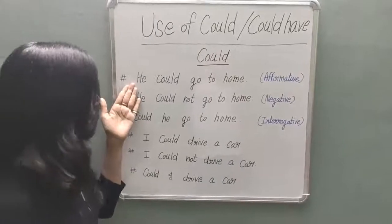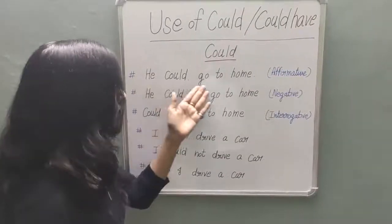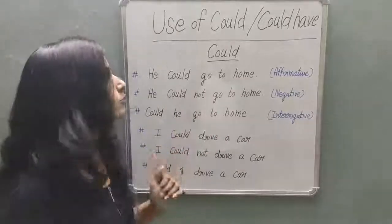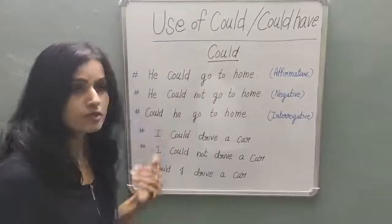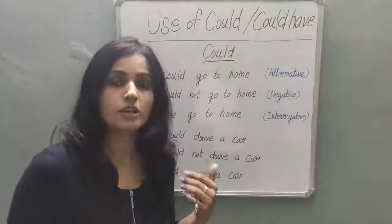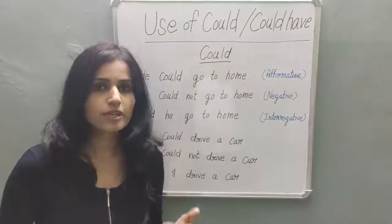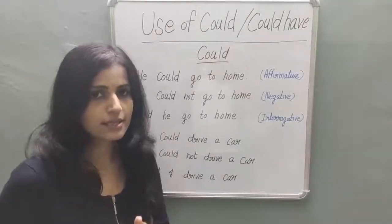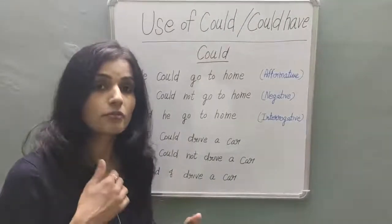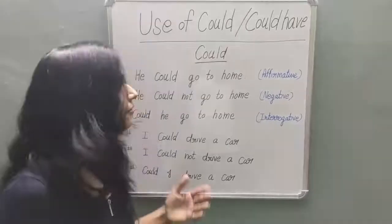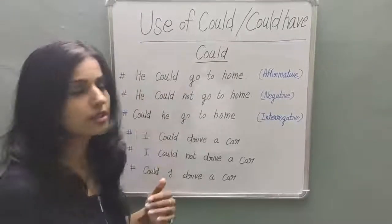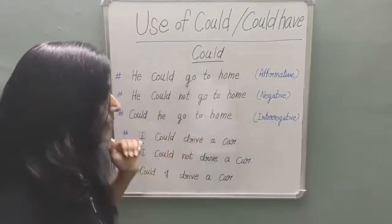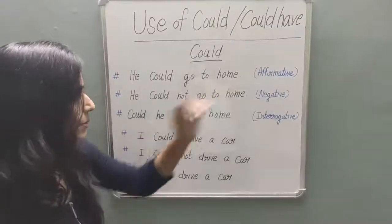First sentence — affirmative: 'He could go home.' In Hindi, this means 'Woh ghar ja sakta tha'. When we create a sentence with 'could', we end in Hindi as 'Saka', 'Saki', 'Sake'. So the affirmative example is: 'He could go home.'